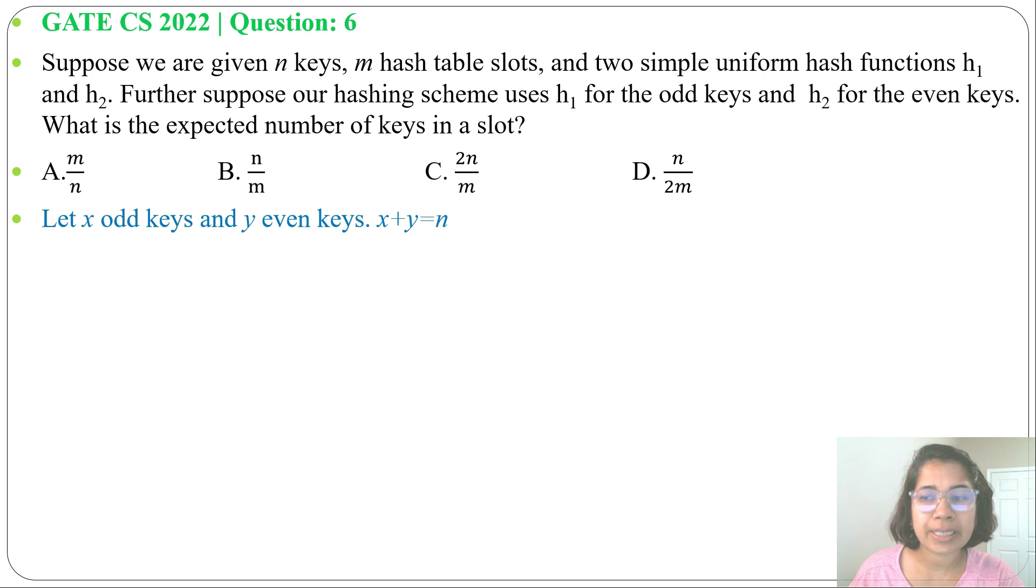hash function for odd keys, h2 is the hash function for even keys, and these odd and even hash values are in m. This h1 and h2 is given just for confusion. Here it's written uniform hash function. When it